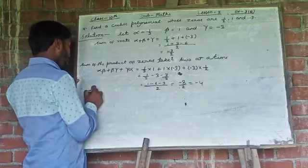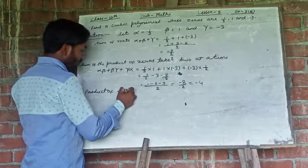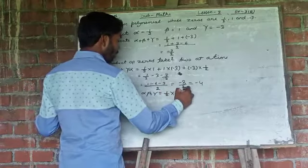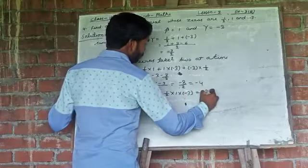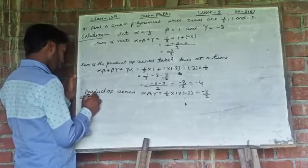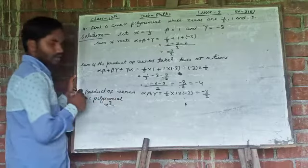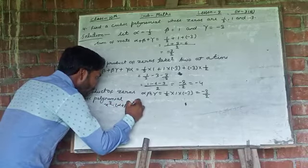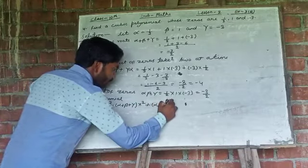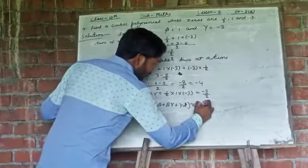And alpha beta gamma, 1 by 2 into 1 into minus 3 is minus 3 by 2. Now we can find the cubic polynomial.